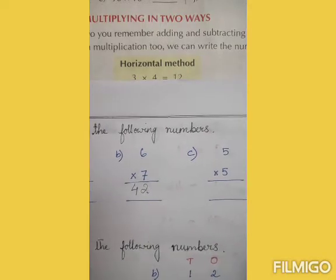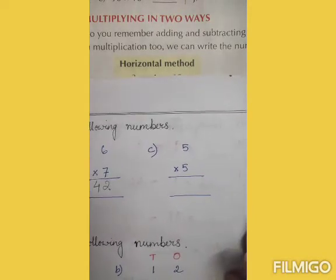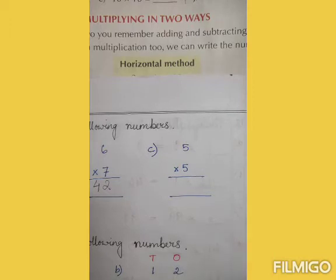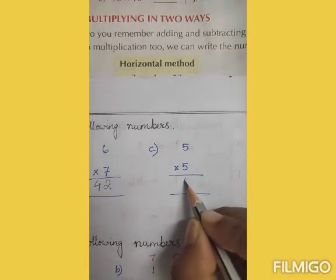Then next is number C: 5 into 5. 5 into 5 is 25. So we will write here 25.